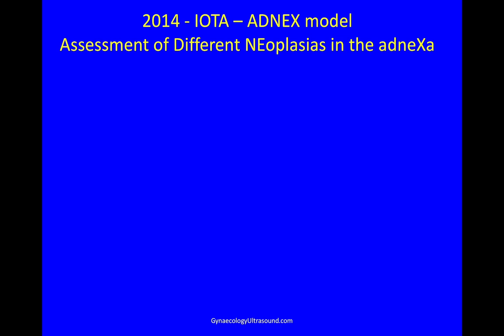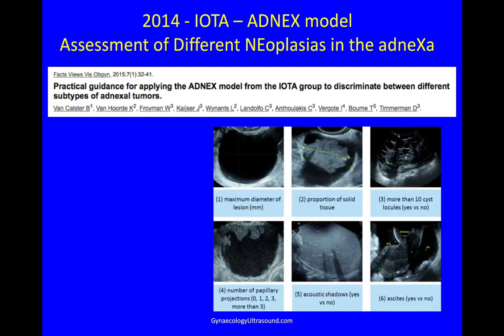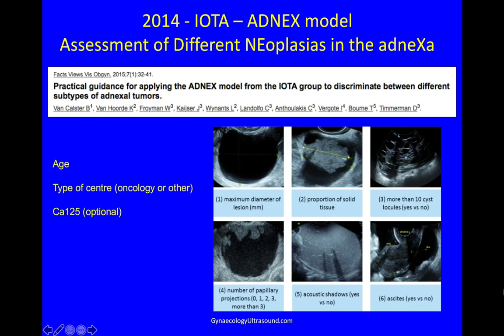The IOTA group published the ADNEX model in 2014 — a fantastic paper. They chose six ultrasound features: the maximum diameter of the lesion in any plane, the maximum diameter of solid material, whether or not there are more than 10 cyst locules, the number of papillations (0, 1, 2, 3, or more than 3), presence or absence of acoustic shadowing, and presence or absence of ascites. They also take into account clinical features: patient age, whether the patient is being scanned in an oncology centre, and a CA-125 which is optional.